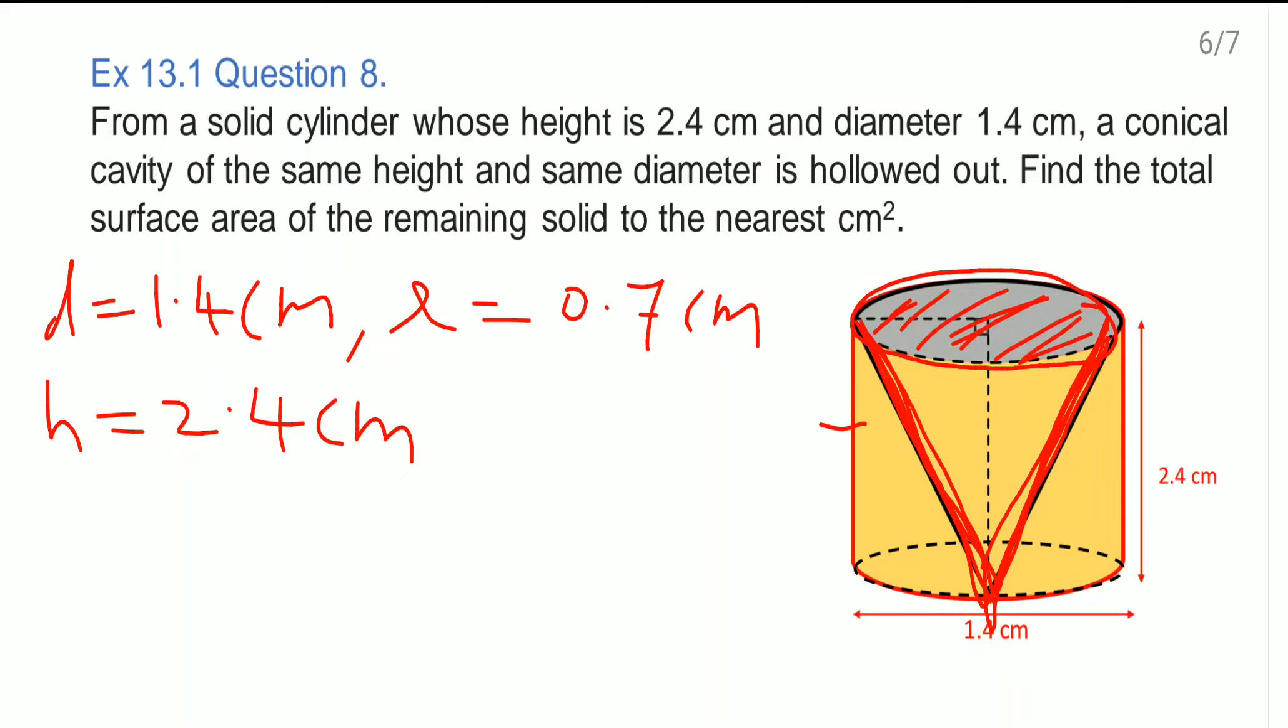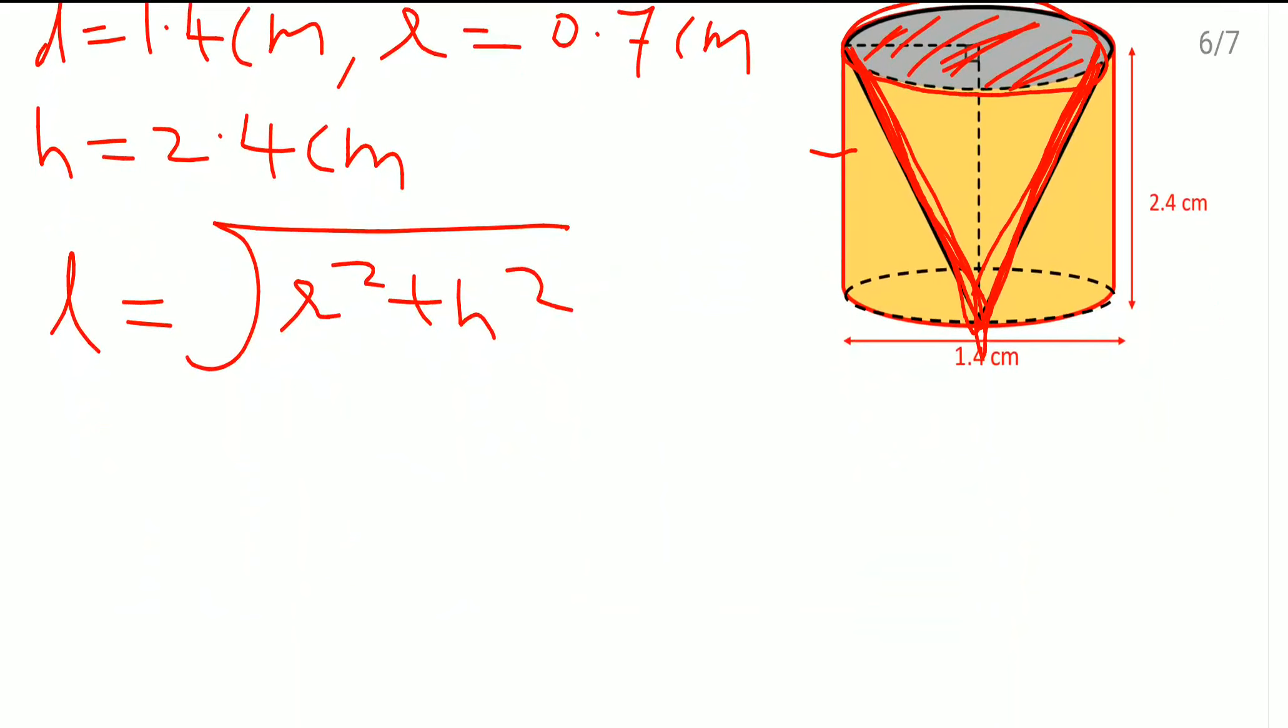So to get the CSA of the cone we will need the slant height L, which is equal to √(r² + h²). We will substitute the values here. r = 0.7² plus h means 2.4².